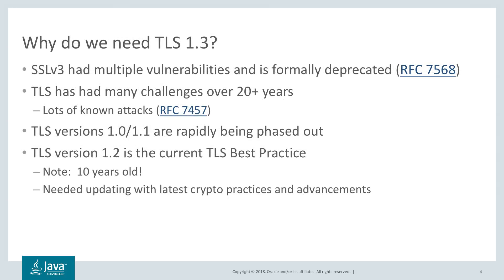So, why do we need another version of TLS? Why do we need TLS 1.3? Let's take a brief look at some of the issues these protocols have had over the years. SSL v3 had multiple vulnerabilities and is formally deprecated in RFC 7568 — it should no longer be used in practice. The TLS protocols have had many challenges over the last 20 or so years. TLS versions 1.0 and 1.1 are both now quite old and are rapidly being phased out. TLS version 1.2 is the current TLS best practice, but it is also fairly old — about 10 years old — so there was general consensus that it needed to be updated with more modern and latest crypto practices and advancements.